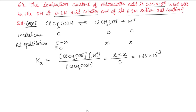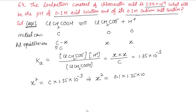Since x equals c·α and α is very small, we get x² = c × 1.35×10⁻³. With c = 0.1, x² = 0.1 × 1.35×10⁻³ = 1.35×10⁻⁴.